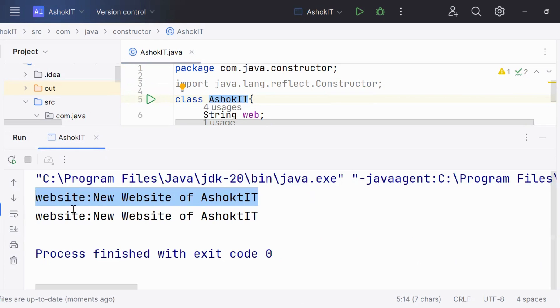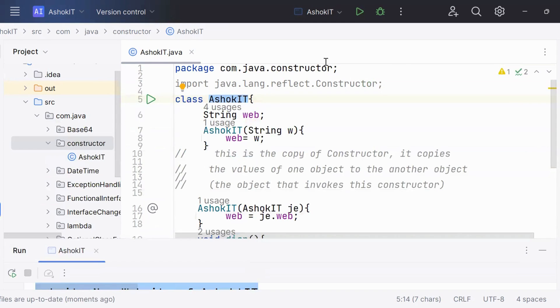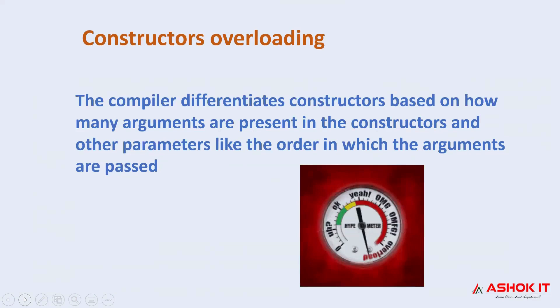Now let's try to execute this program and see the output. You can see the program has been successfully executed, and we got the new website of AshokIT and this output is displayed. Let's move to the next concept.